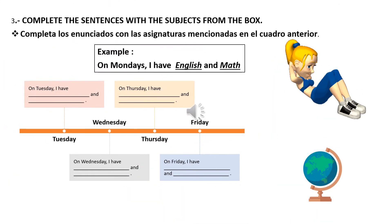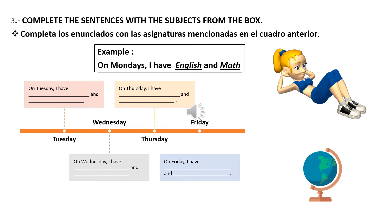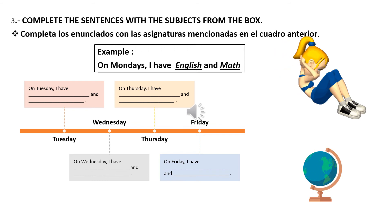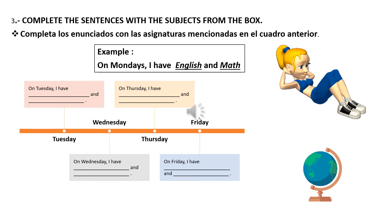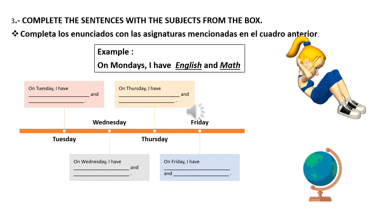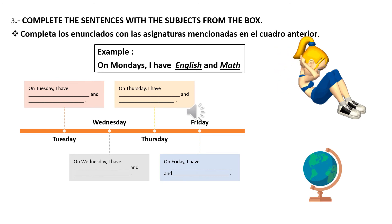Number 3: Complete sentences with the subjects from the box. Completa los enunciados con las asignaturas mencionadas en el cuadro anterior. Hay un ejemplo: On Monday I have English and Math. Ustedes continúan.